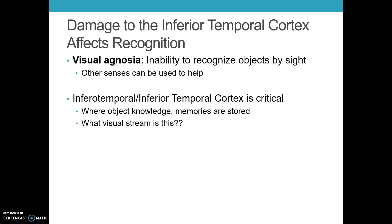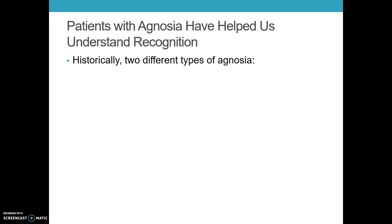Patients with agnosia can actually use other senses such as touch or taste to help, but if sight alone is being used, it's not going to work very well. The inferior temporal cortex is critical to this — this is where object knowledge and memories are stored. This is part of the ventral stream, or the what pathway.